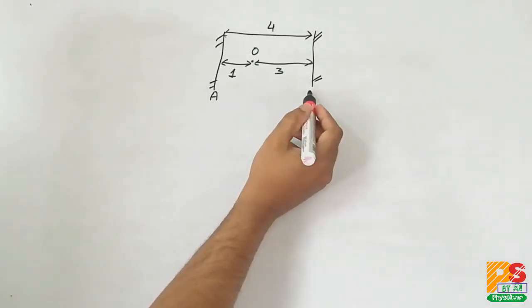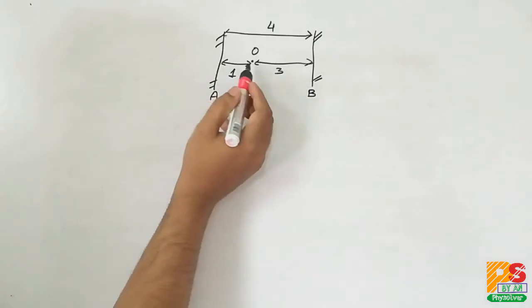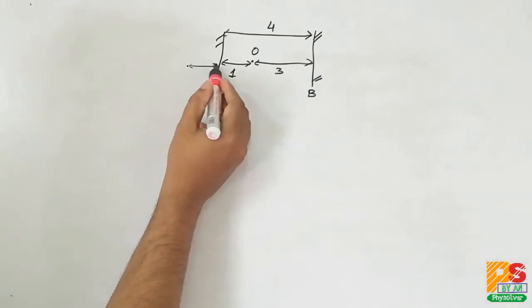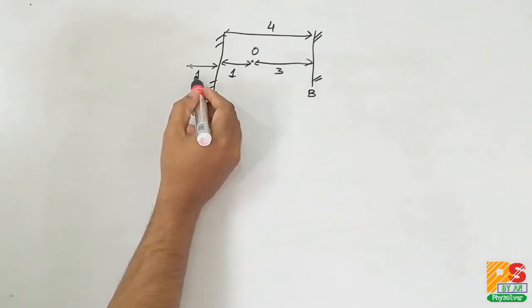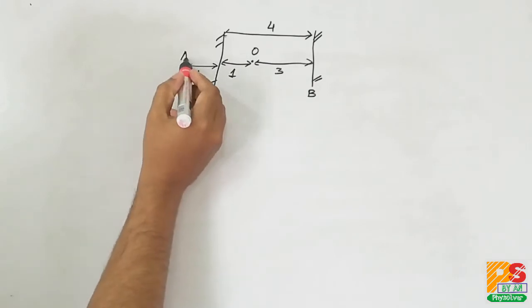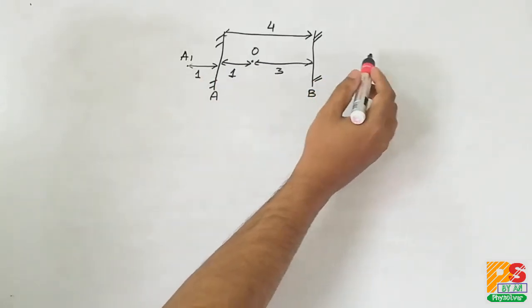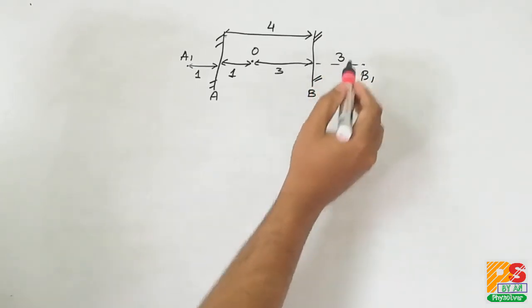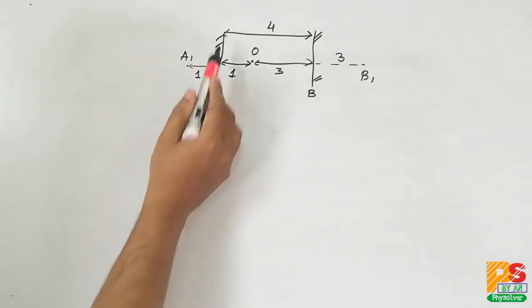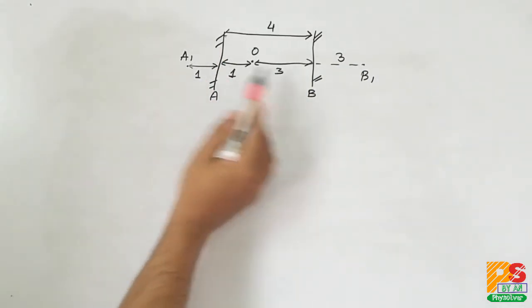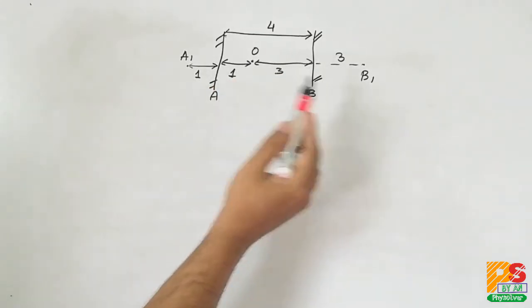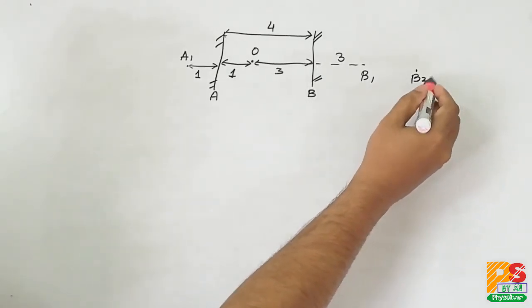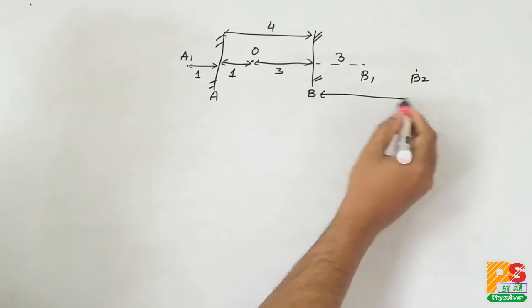Let's name the mirrors: the left mirror is A and the right mirror is B. For the first image behind A, it will be situated at 1 cm behind A, because for a plane mirror object distance equals image distance. Similarly, B1 is 3 cm behind B. Now A1 is behind A but in front of B, so it will be a virtual object for B, which will form the second image behind B at a distance of 5 cm.